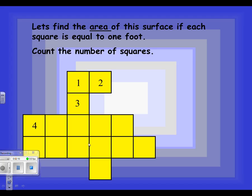So, we have 1, 2, 3, 4, 5, 6, 7, 8, 9, 10, 11, 12, 13, 14, 15. We've got 15 squares. That tells us, then, we have 15 square feet. Area equals 15 square feet.